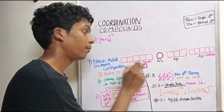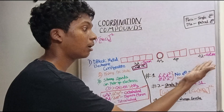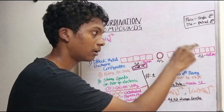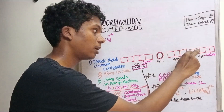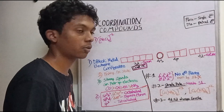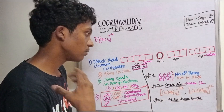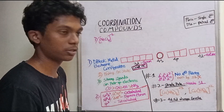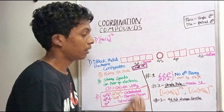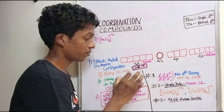If you use the inner orbitals (3D), it is an inner orbital complex. If you use the outer orbitals (4D and beyond), it is an outer orbital complex. It is a simple concept.